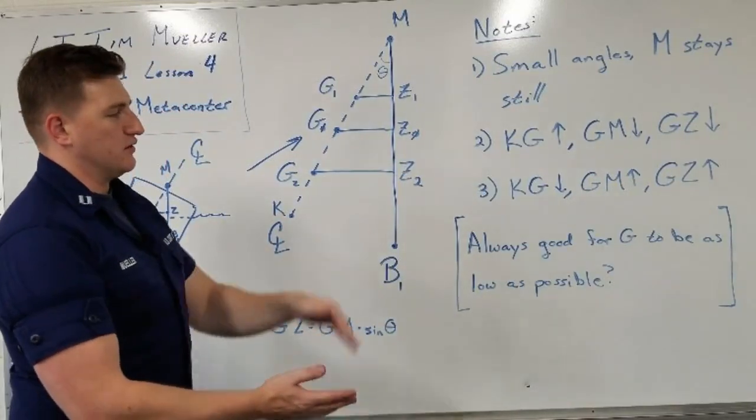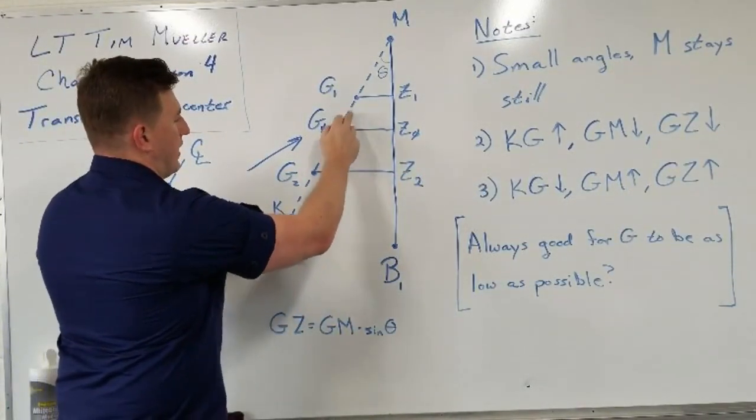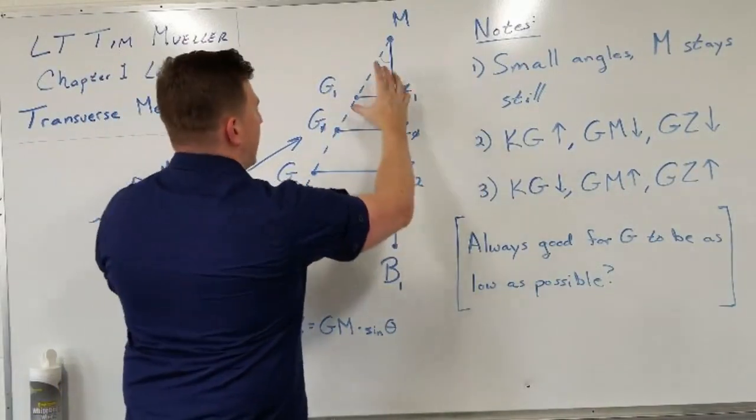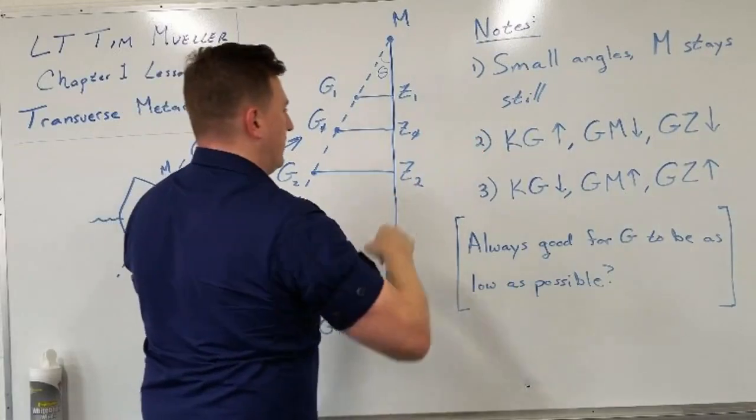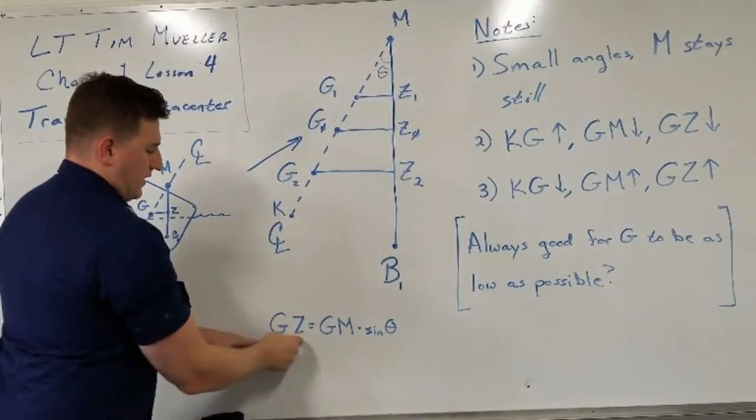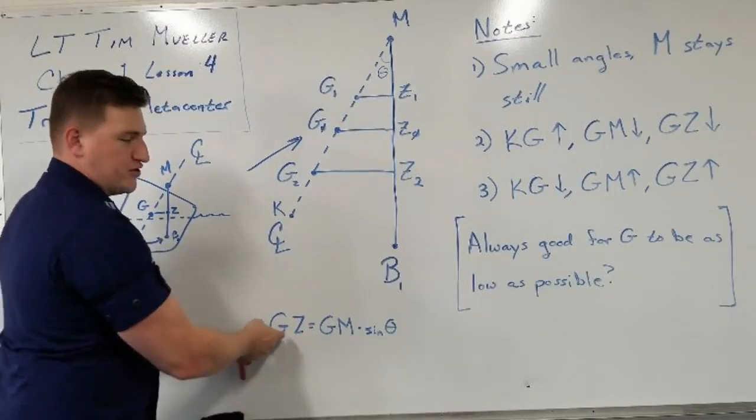As your KG gets larger, so the distance from the keel to the center of gravity, so if we go up here, our GM gets smaller. The distance from G to M gets smaller. And if we go here, if that sine theta is the same, GM was smaller, our GZ gets smaller.